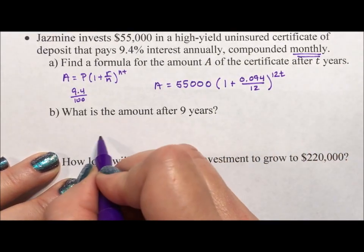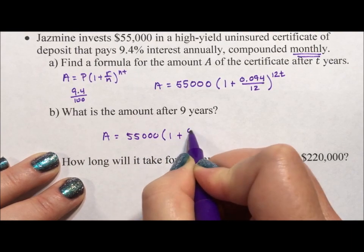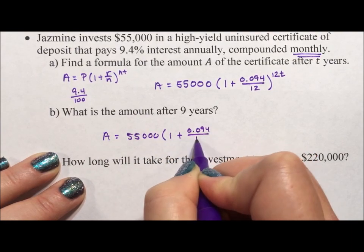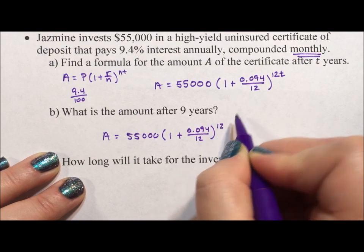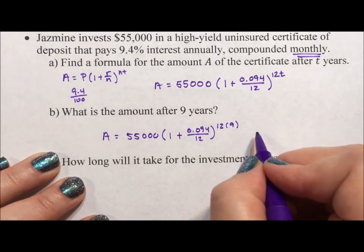What is the amount after 9 years? So A = 55,000(1 + 0.094/12)^(12×9). And this is going to equal...